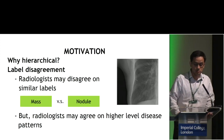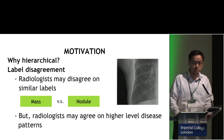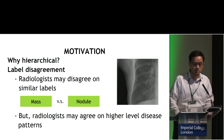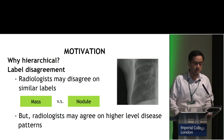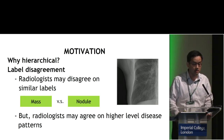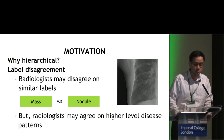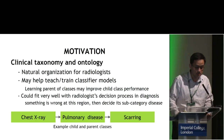So first, why hierarchical? We find that when radiologists are diagnosing chest X-ray images, they may disagree on similar labels — for example, mass and nodules. But we find that radiologists may agree on high-level disease patterns. For this mass and nodule case, they are likely saying there are some high-intensity clusters and there exists a lesion area, but they will not agree on whether it is a mass or nodule.